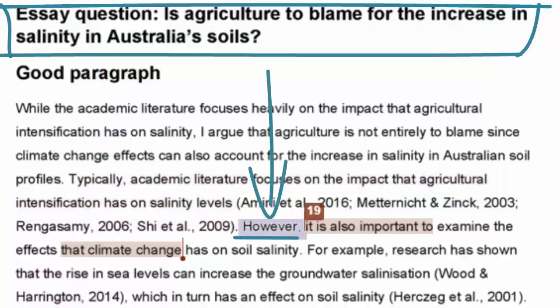At the beginning of the next sentence, the word however shows that, in contrast to what is typically accepted, the student is critical of the trend. When the student writes, however, it is also important to examine the effects that climate change has on soil salinity. This shows the student's own argument.